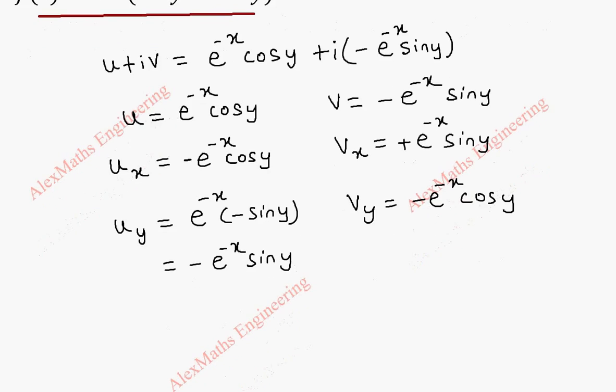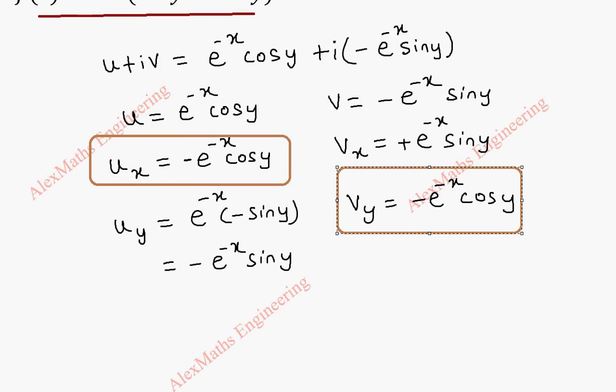So from these things, we notice that u_x is equal to v_y. Both are minus e power minus x into cos y. And again, we also notice u_y is minus times of v_x. So they are same term with opposite sign.